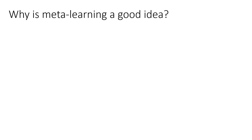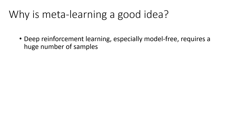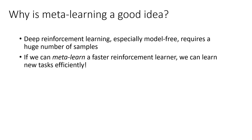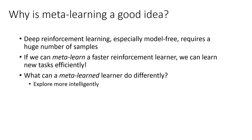So why is meta-learning a good idea? Deep reinforcement learning, especially model-free learning, requires a huge number of samples. If you can meta-learn a faster reinforcement learner, then you can learn new tasks efficiently. What might a meta-learner do differently? Well, a meta-learned RL method might explore more intelligently, because something about solving those prior tasks tells it how to structure its exploration to acquire a new task quickly. It might avoid trying actions that it knows are useless. It might also acquire the right features more quickly, so the network can change rapidly to modify its feature representations for the new task.